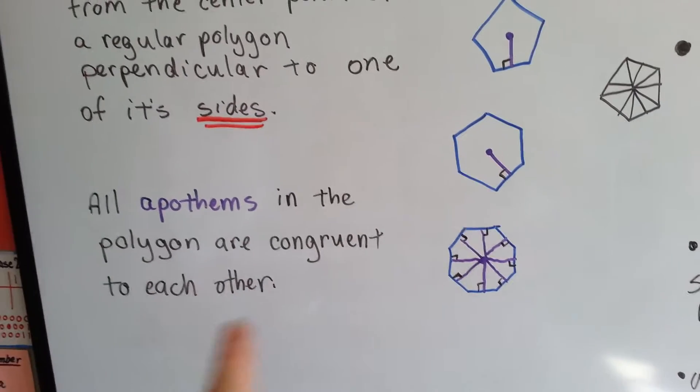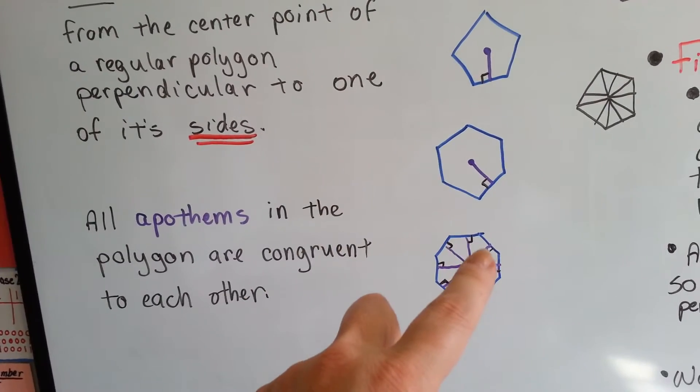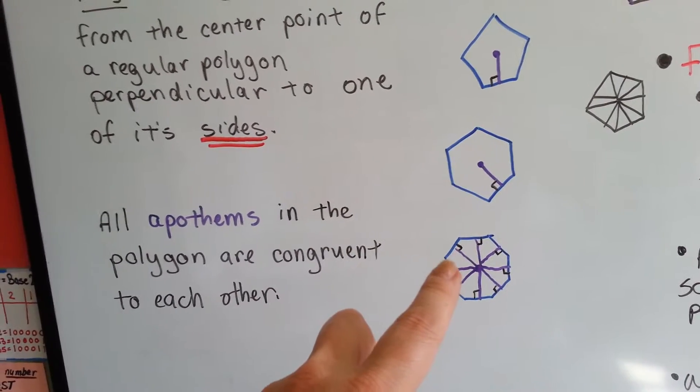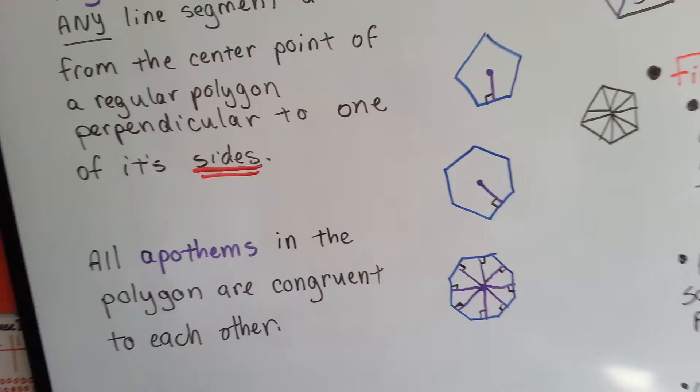They're all congruent to each other. Doesn't that make sense? This one is equal to that one is equal to that one, see? They're all equal to each other, so that's going to help us too.